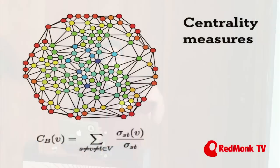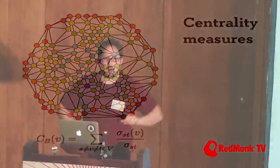For example, there are centrality measures. Betweenness centrality is a metric that says: for any person or anything in a network, if you need to go from A to B — if you need to get your message out to a person through the social network — the centrality measure tells you how likely it is that any random path through the network will go through a particular node. The most central people in a network are those most likely to mediate the information flow.